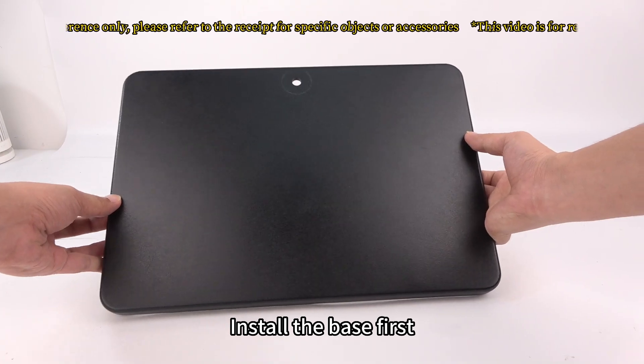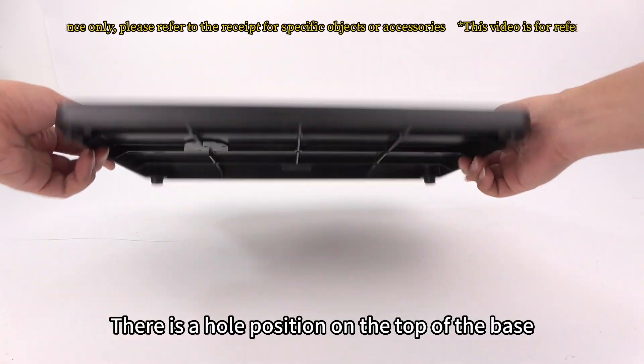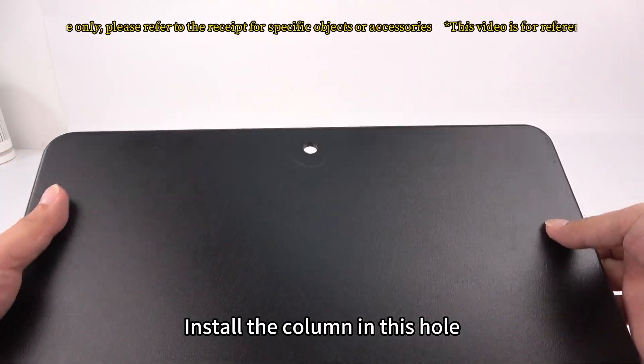Install the base first. There is a hole position on the top of the base. Install the column in this hole.